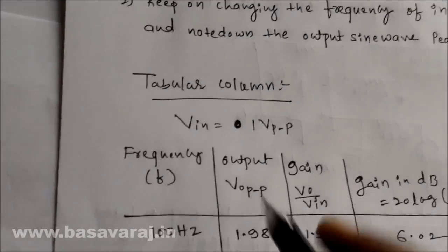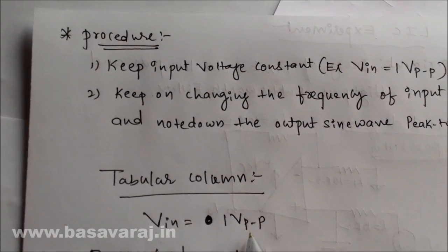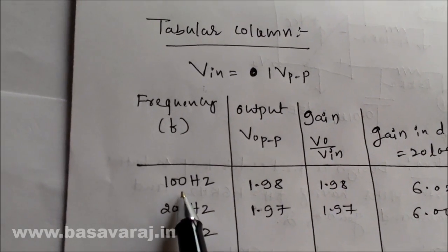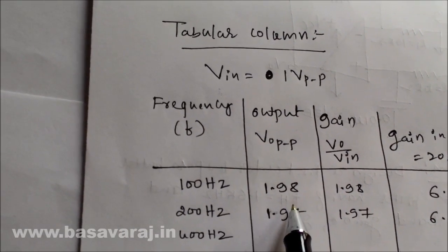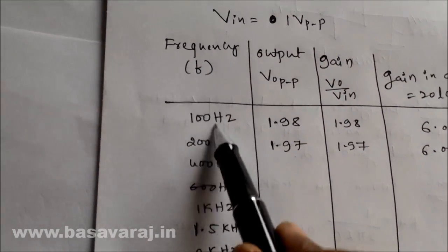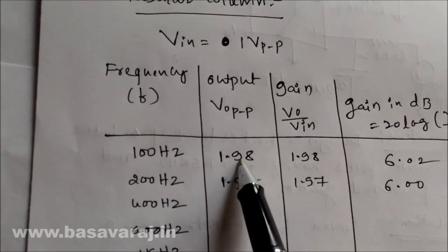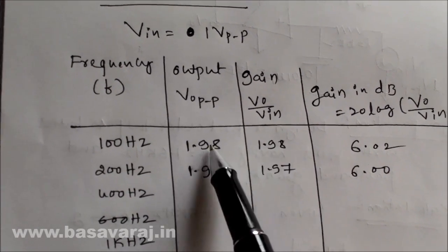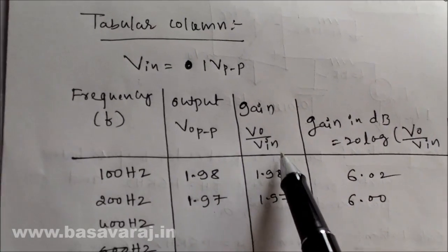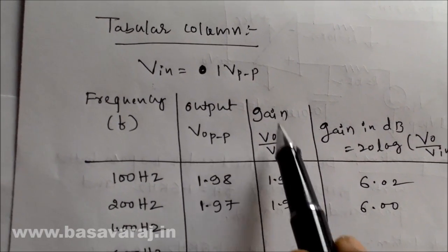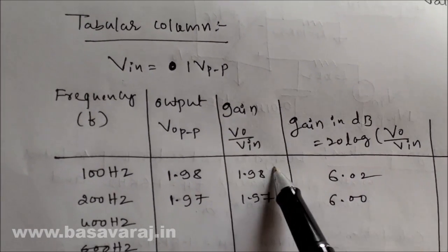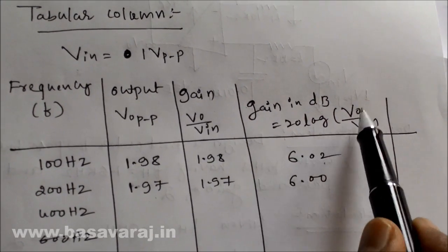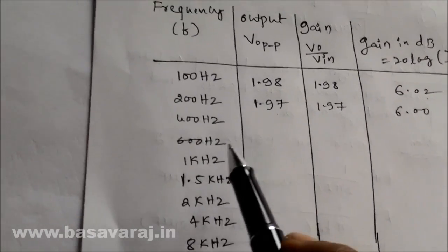Keep the input voltage constant at 1 volt peak-to-peak and change the input signal frequency. For different input signal frequencies, note the output voltage. For example, at 100 Hz input, the output will be approximately 1.98 or 2.02 volts. Gain = Vout / Vin = 1.98 / 1 = 1.98. To convert gain from linear to decibel scale, use: Gain (dB) = 20 × log(Vout / Vin).